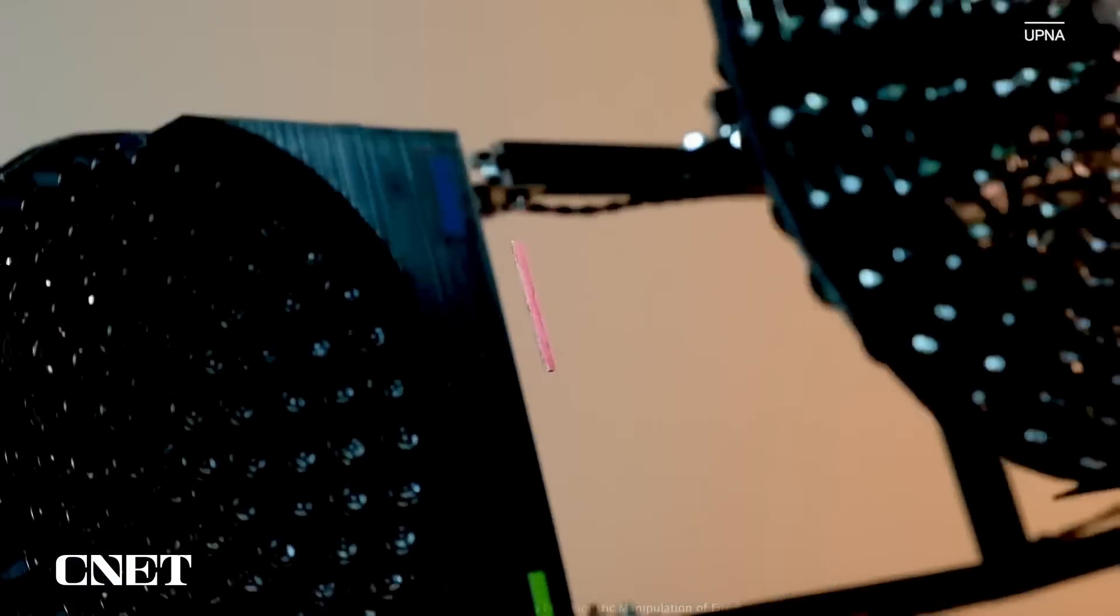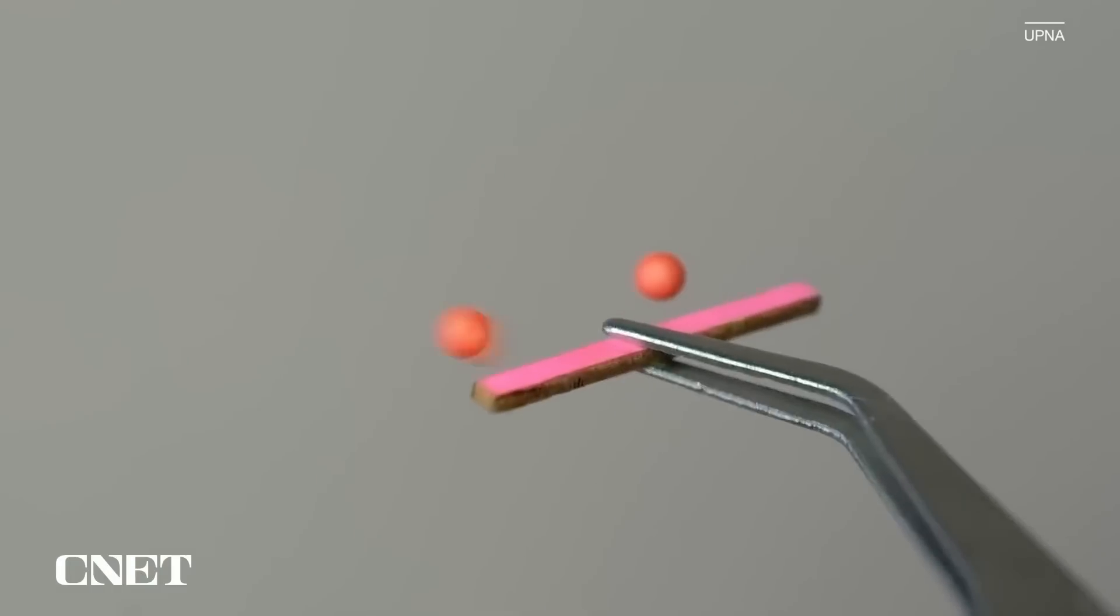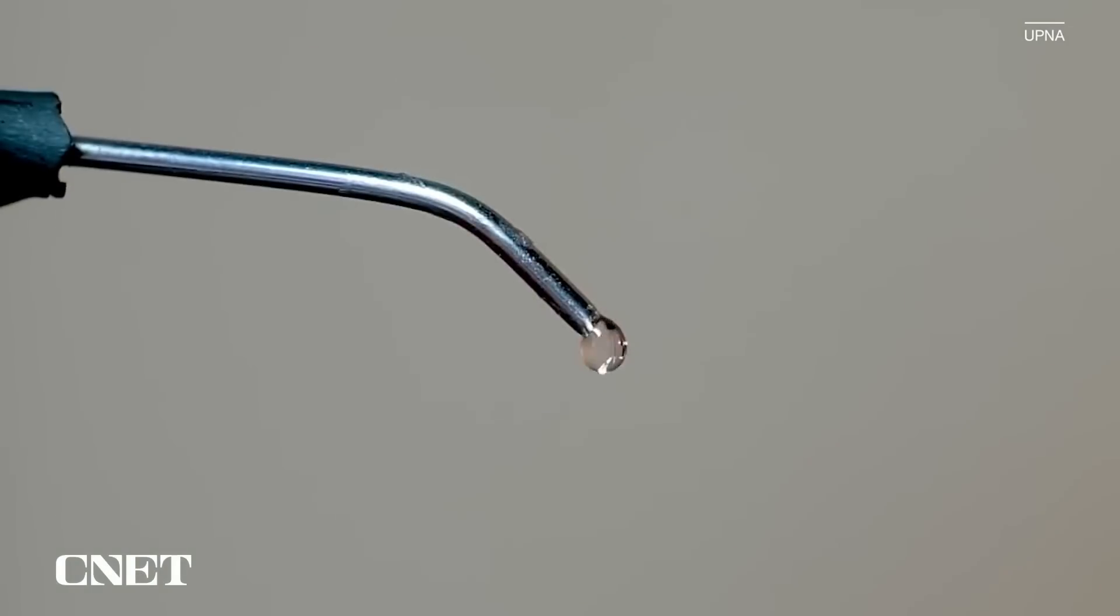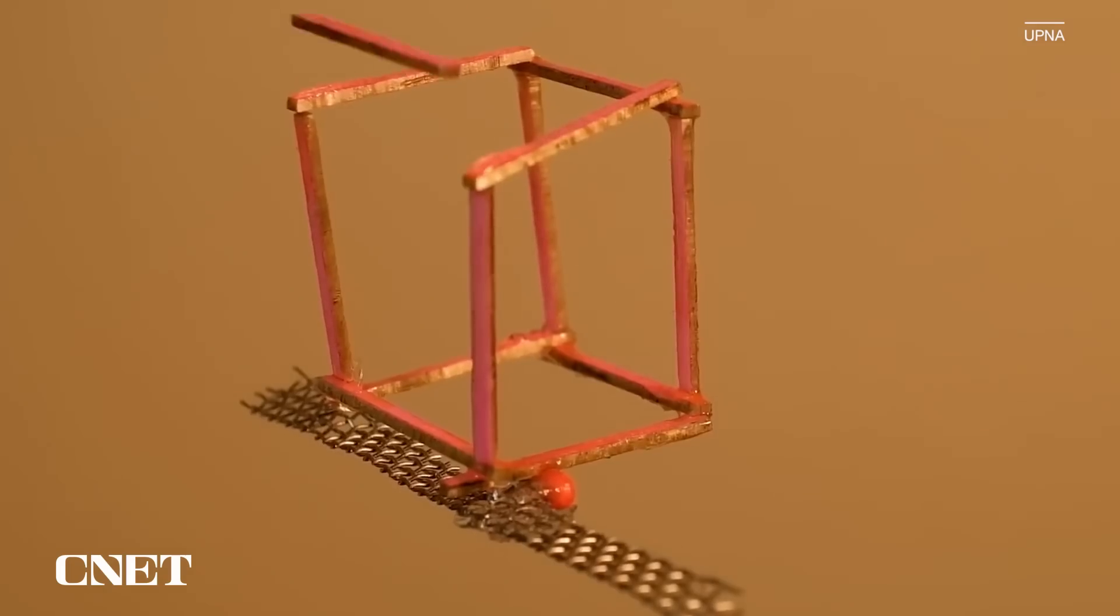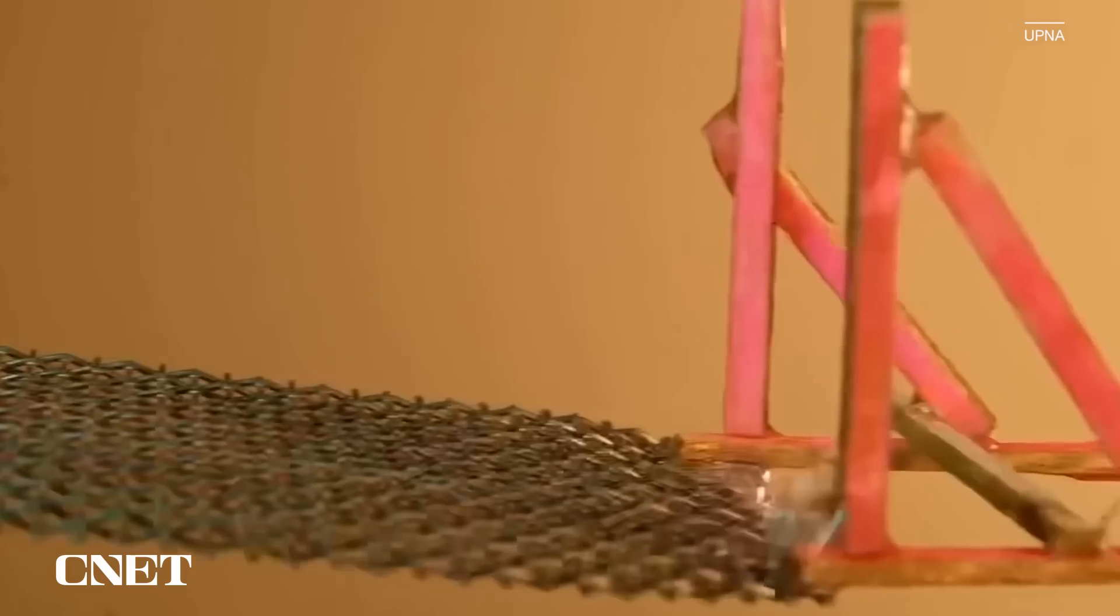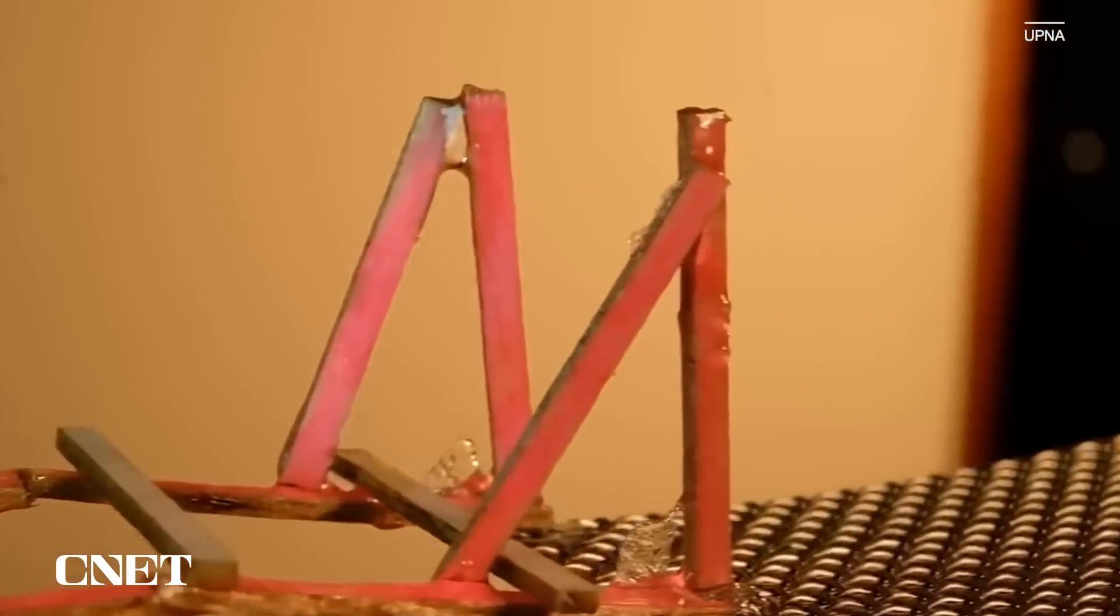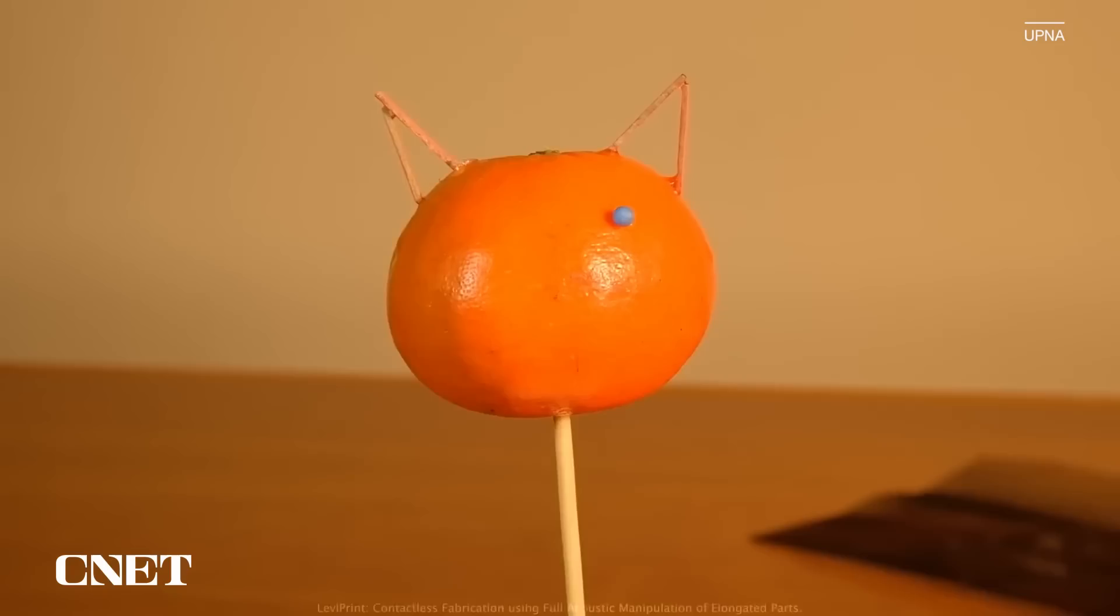The video released by LevyPrint shows the device using sticks, spheres, and UV curable glue droplets to build a variety of different shapes, structures, and this orange cat thing.